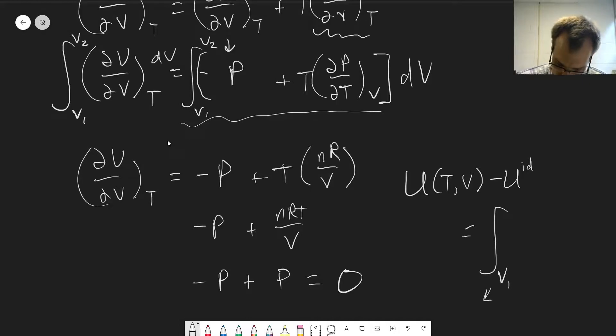So that sort of is the beginning point of our integral is that we have V1, or I should not say 1, but we call that V ideal, where V ideal is a very large volume such that the ideal gas law is applicable up to some other volume, V.